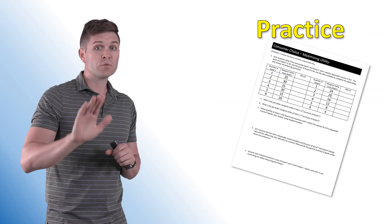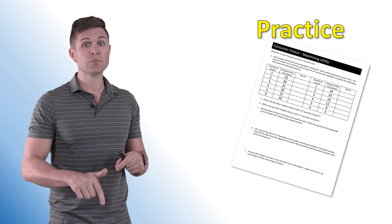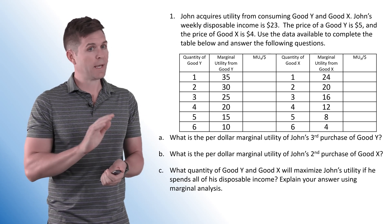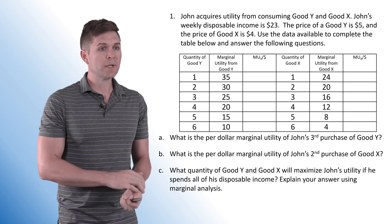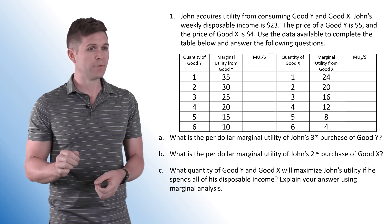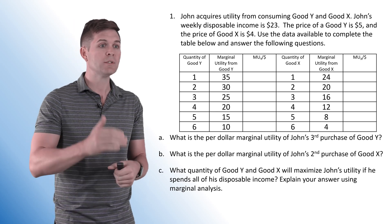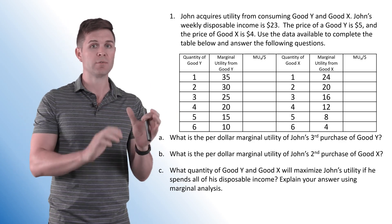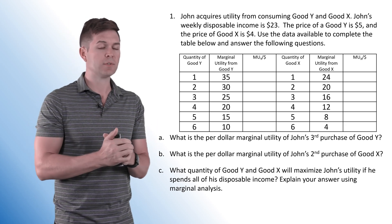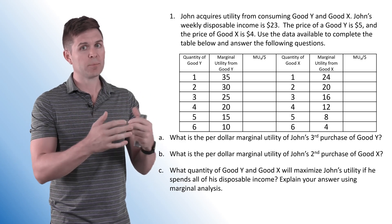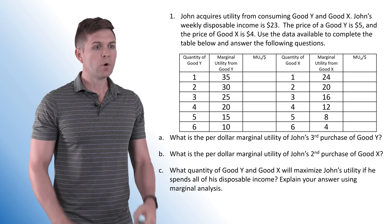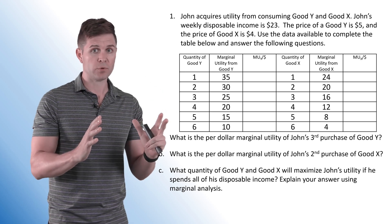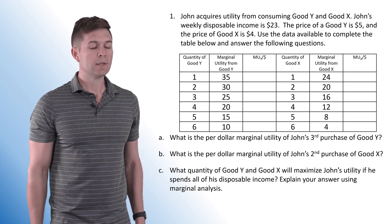Let's do a consumer choice practice problem. John acquires utility from consuming good Y and good X. John's weekly disposable income is $23. The price of good Y is $5 and the price of good X is $4. We'll use the available data to complete the table and answer the following questions. On a true FRQ, you'd create your own columns; I've set it up to help you get used to doing that. Let's start with the first question: what is the per dollar marginal utility of John's third purchase of good Y?